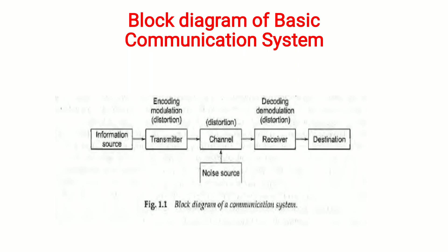The last block is the destination, which receives the message signal and processes it to determine the information present in it. Humans are usually the destinations that receive the message signal sent by the information source. This completes the block diagram of a communication system.